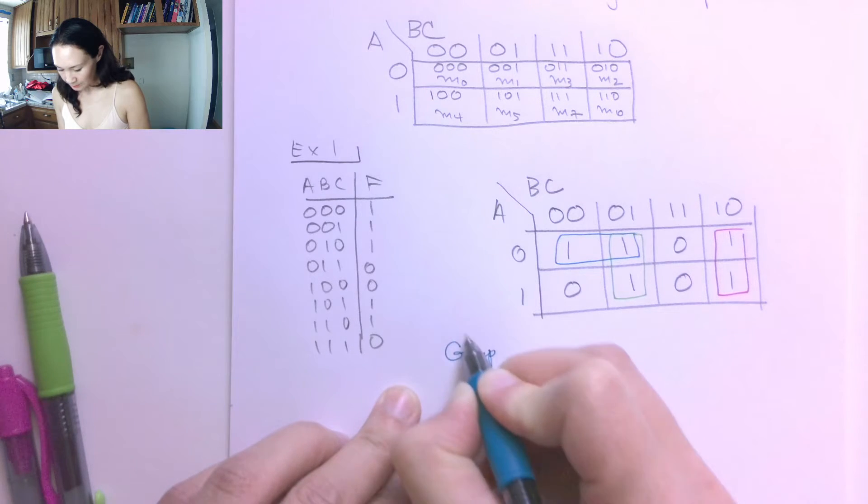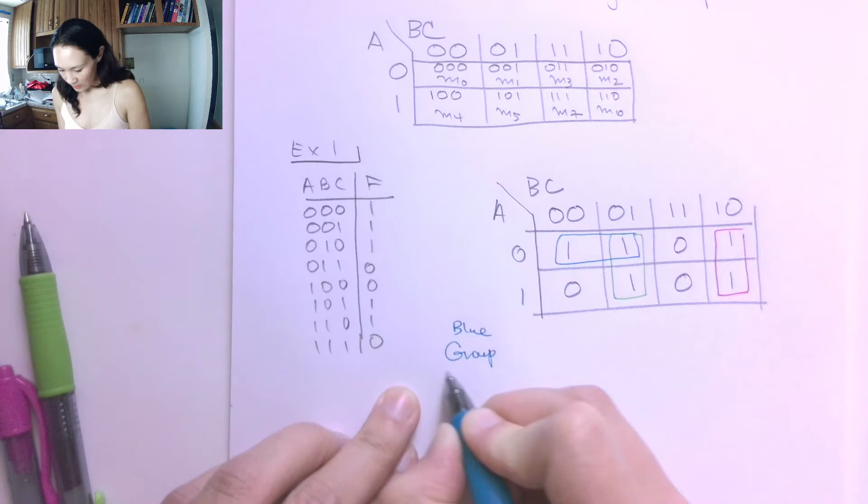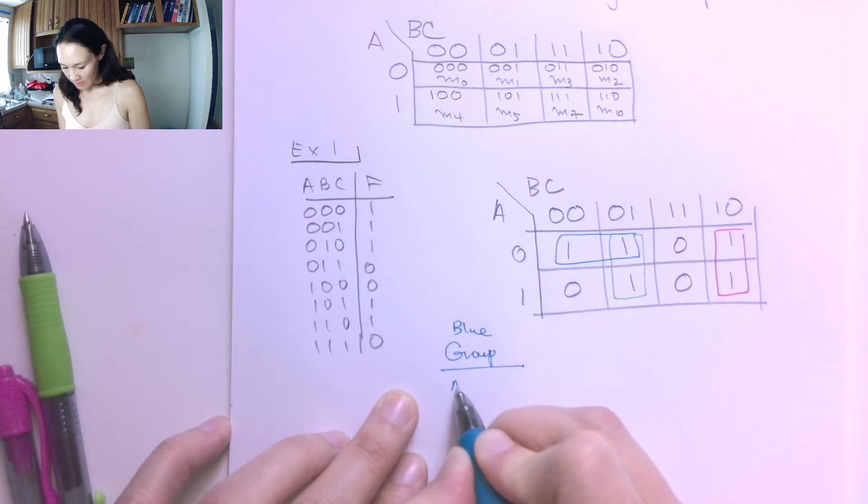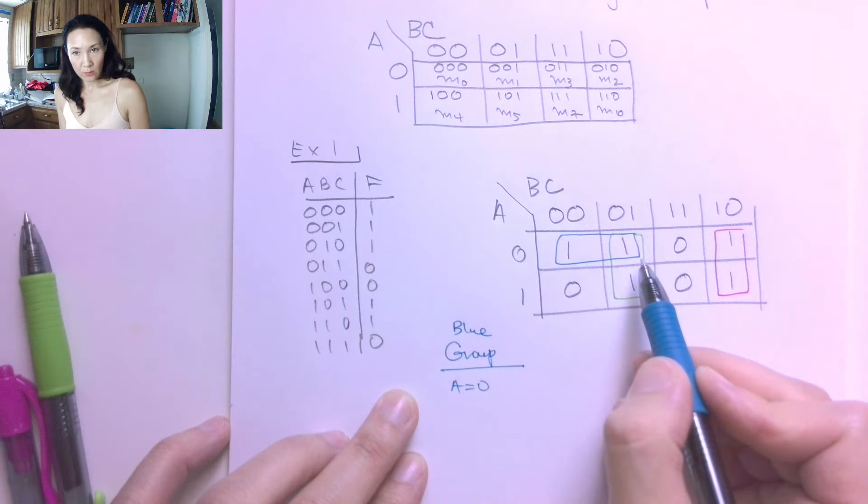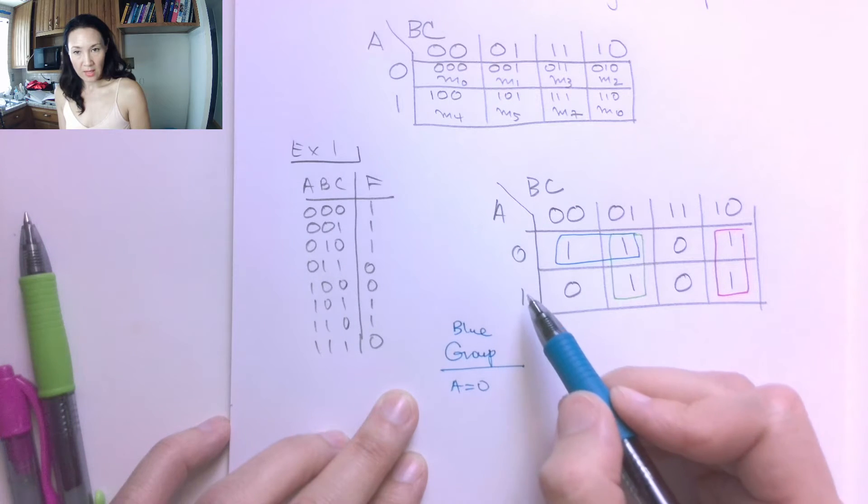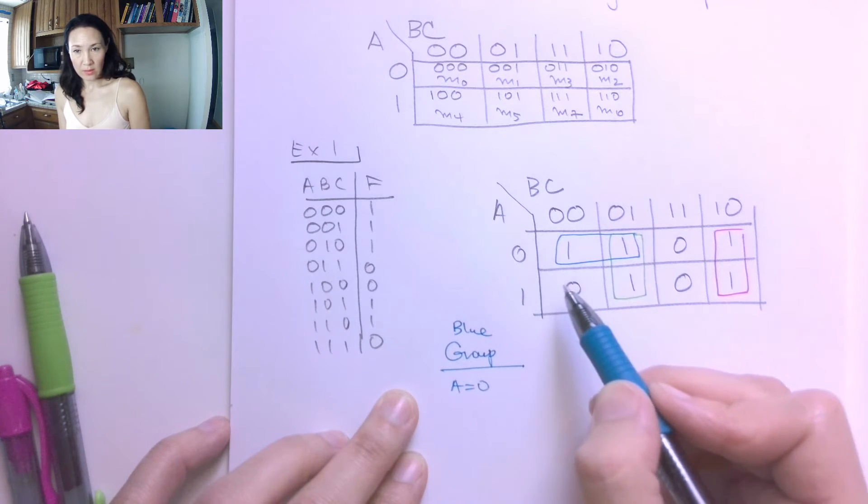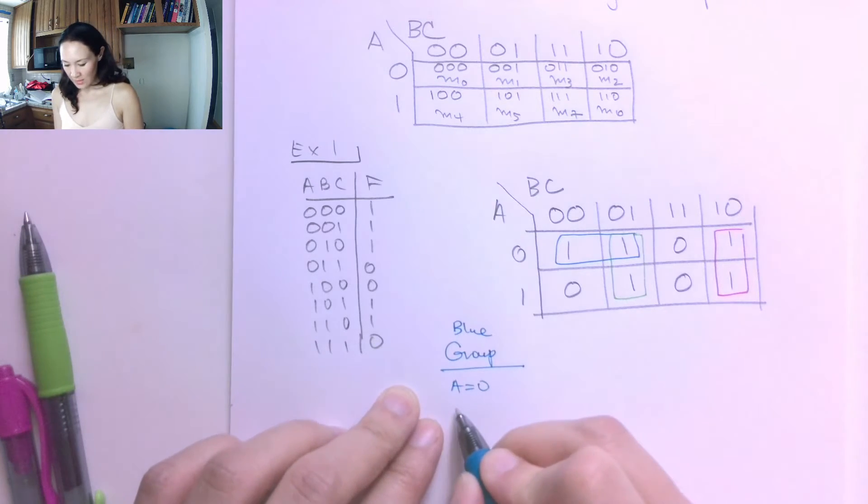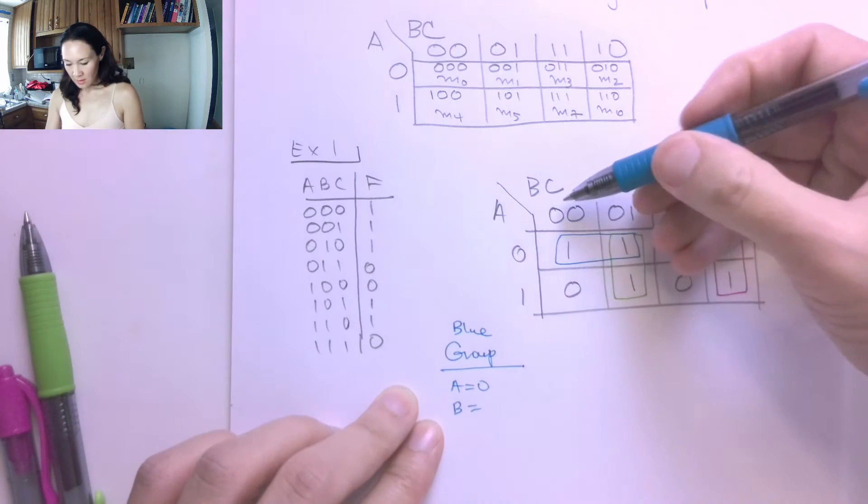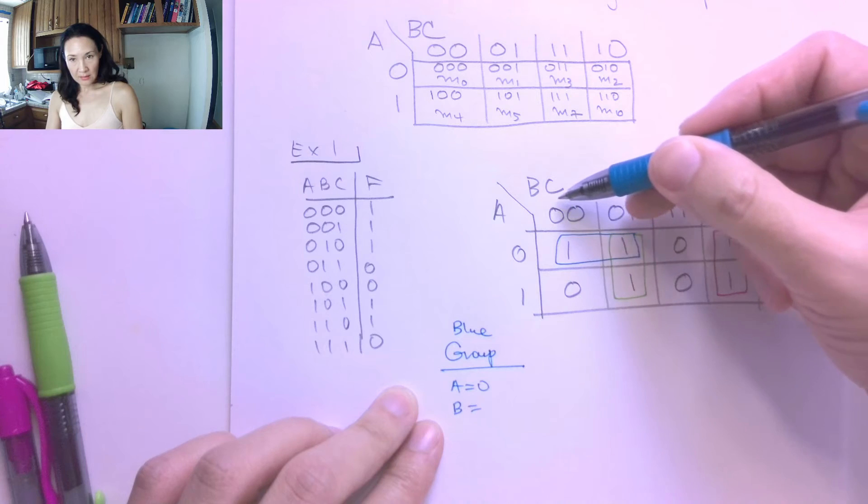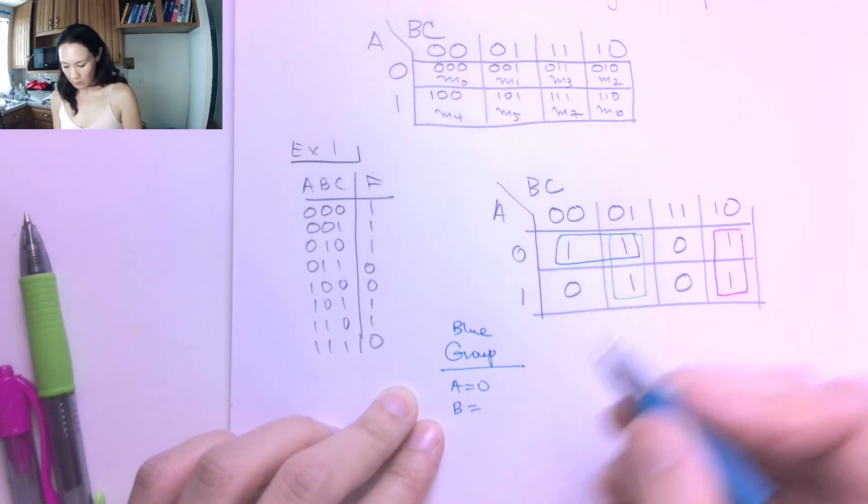So let's figure out what these groups are telling us. So for the blue group, we have that a is equal to 0, right? Because along this row, we have a equals to 0. If a equals to 1, that's not within our blue group. And we have that b between these two bits, b is equal to 0 in both of these cases. So b is equal to 0.